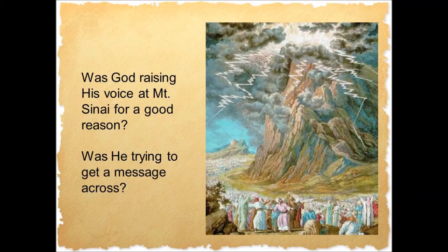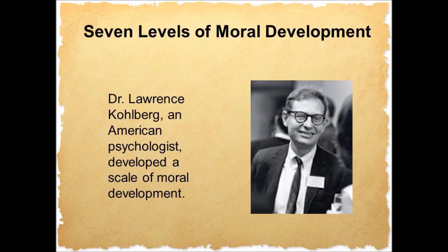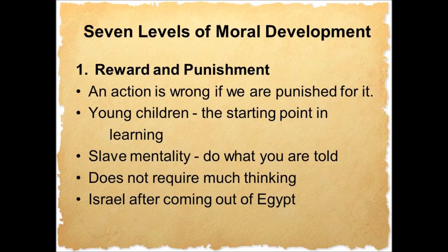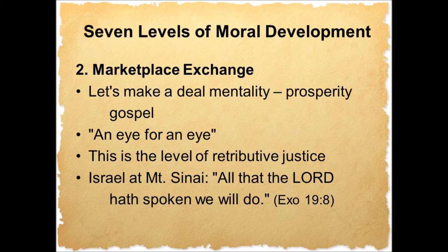I would like to look at something very important in understanding God's law, and why there is such a range in understanding it. Dr. Lawrence Kohlberg was an American psychologist who developed what is now known as the Kohlberg Scale of Moral Development. Here is a brief description of the seven levels adapted from his research. Level one is reward and punishment — an action is wrong if we are punished for it. We think of young children who are at the starting point in learning. It's a slave mentality — do what you are told. It does not require much thinking. It is describing Israel after coming out of Egypt. Level two is marketplace exchange — the let's-make-a-deal mentality, the prosperity gospel, an eye for an eye. This is the level of retributive justice.